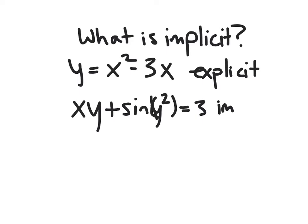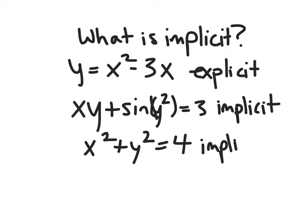So here we say y is an implicit function of x. So another example would be simply x squared plus y squared is 4, so a circle. This would also be implicit because, again, we can't write y as one function of x.